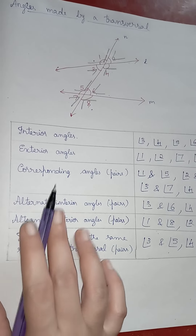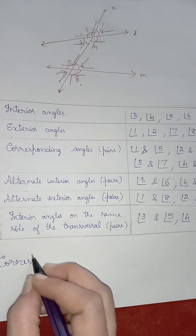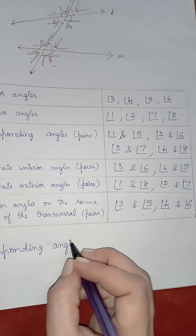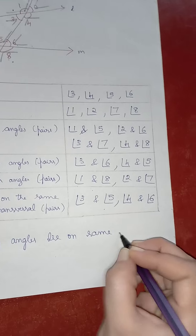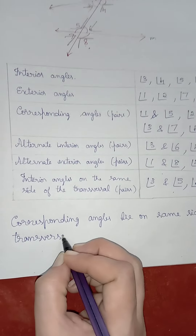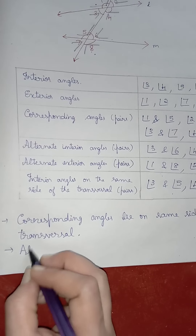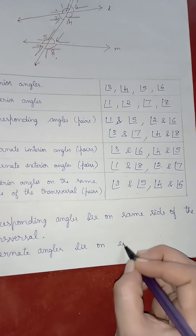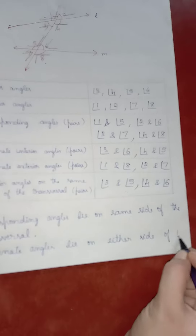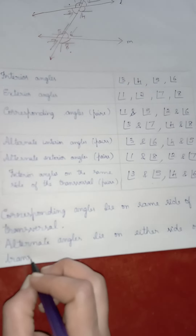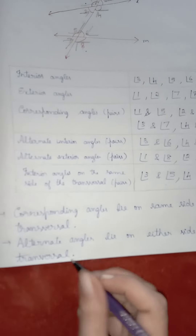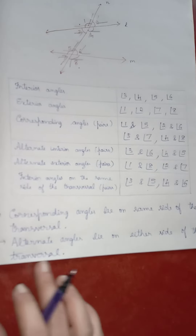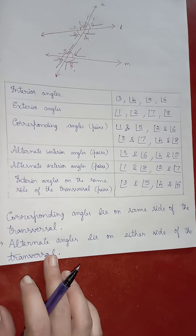The main points to remember: corresponding angles lie on the same side of the transversal, and alternate angles lie on either side of the transversal. Thank you.